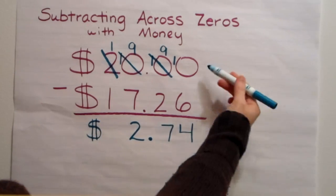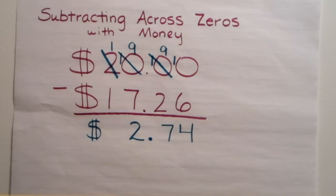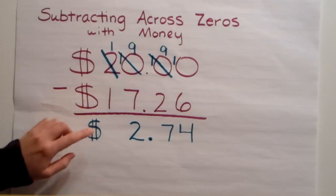When I have $20, or a $20 bill, and I take away $17.26, I end up with a total of $2.74.